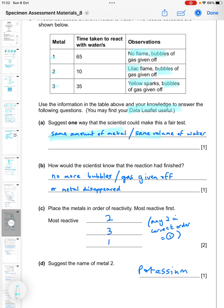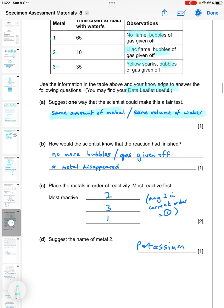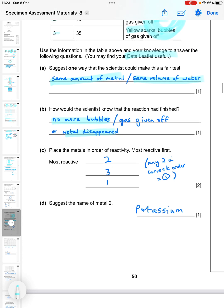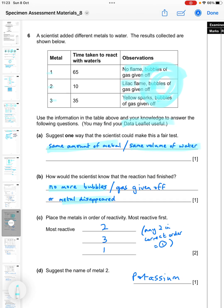How would the scientists know that the reaction had finished? Well, each of these says there are bubbles, so if there are no more bubbles you know the reaction is finished. You could also word that as no more gas has been given off, or you could say the metal had disappeared. Place the metals in order of reactivity with the most reactive first. We're looking at the times here, so the most reactive is the fastest which is number two, then the next one is number three at 35, and then number one was quite slow at 65.